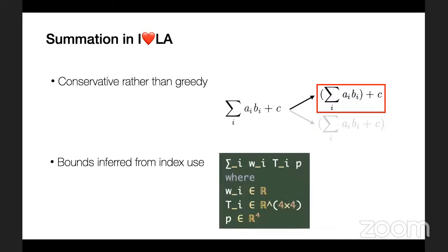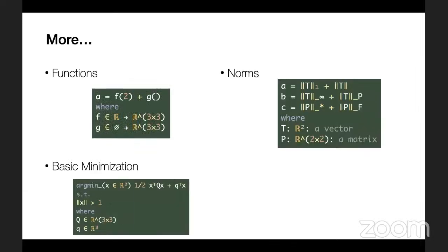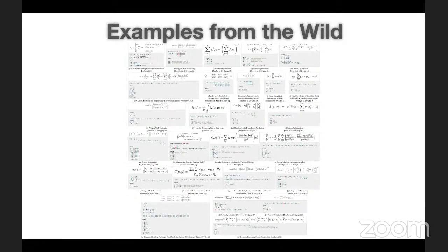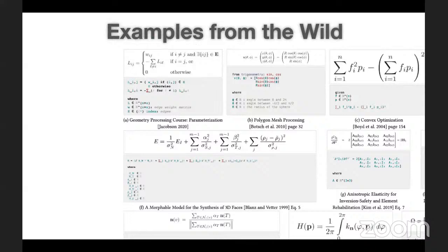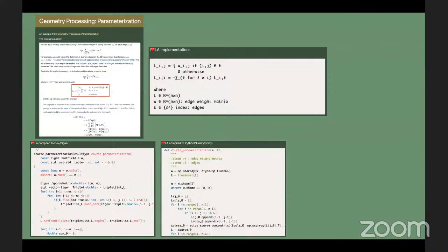Summation in AHDA-A takes its bounds from the use of the index in the expression. In the linear blend skinning example, W is the sequence of scalars and T is the sequence of matrices of the same size. AHDA-A also supports functions, various norms, basic minimization, and basic integration. We evaluated AHDA-A on a variety of examples from different papers, books, and online courses. For each example, we show the original formula, the AHDA-A implementation, and the output code for Eigen, NumPy, MATLAB, LaTeX, and the rendered LaTeX output.